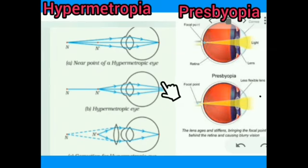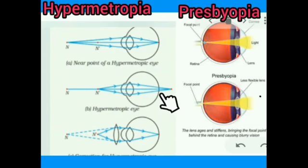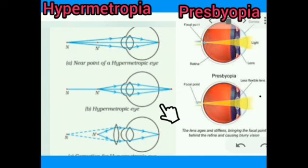This topic is very important. All of you should write about what is meant by hypermetropia, what causes it, and with the help of a ray diagram, explain how hypermetropia is rectified.